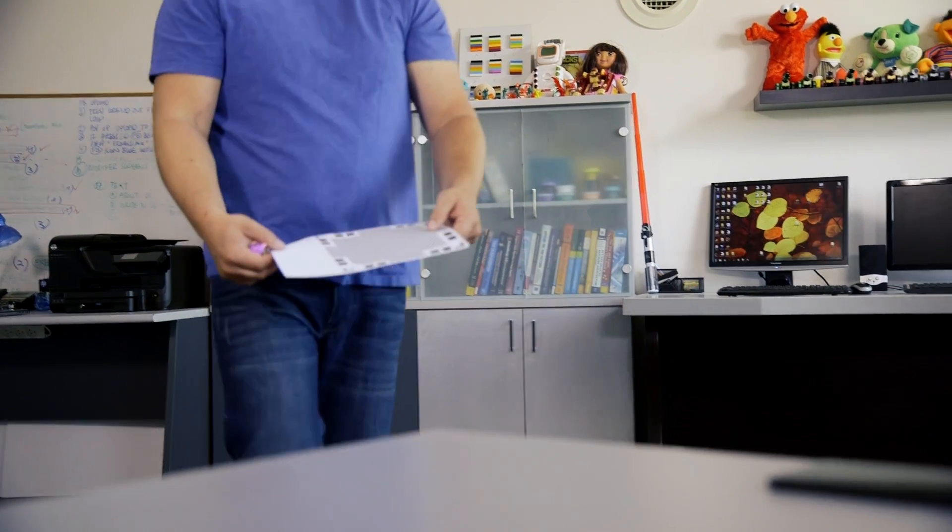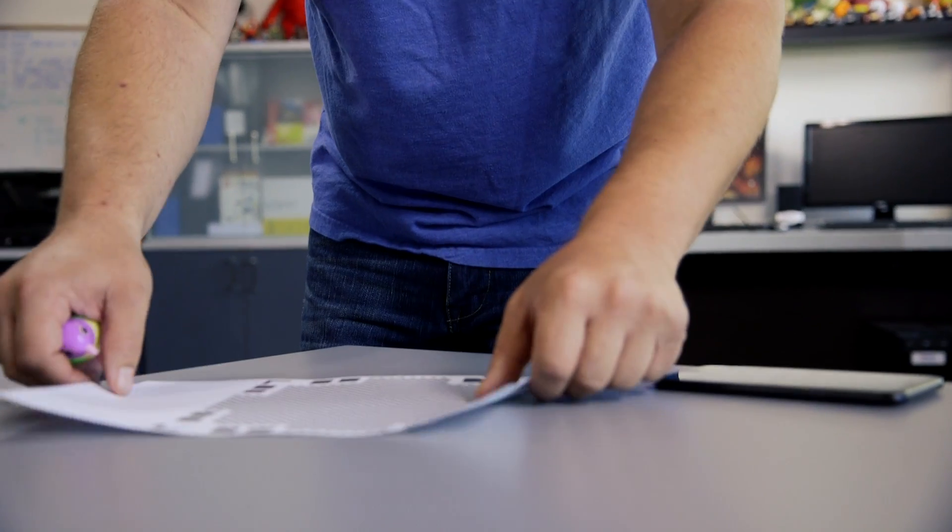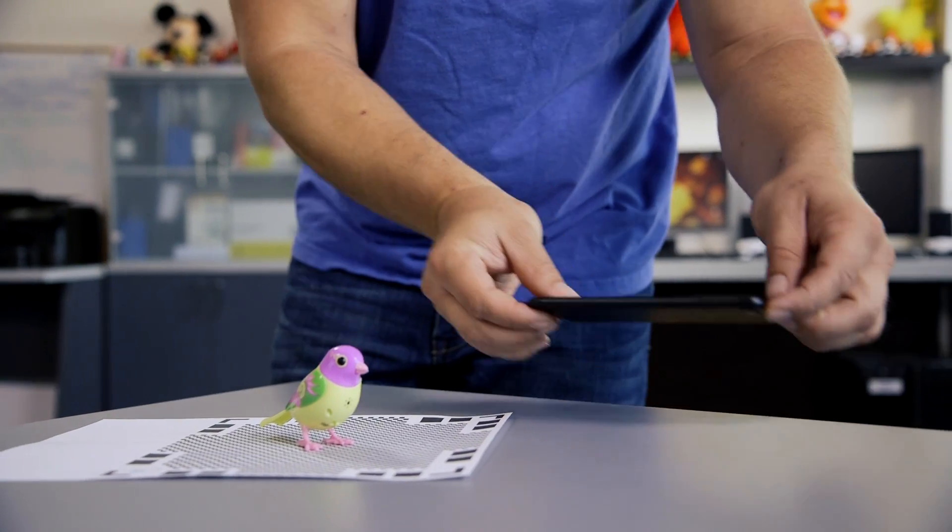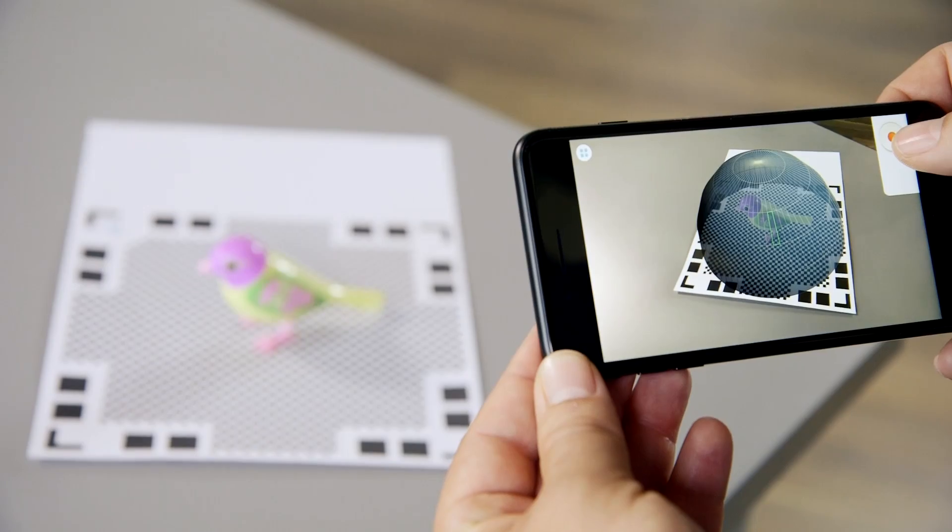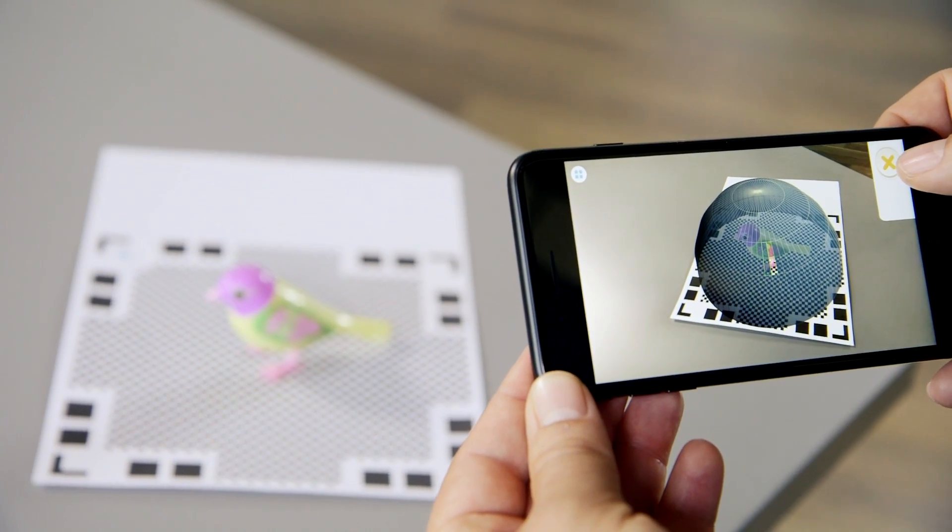Scanning is super easy with Clone. Just place your object in the middle of the mat and our AR dome will guide you through the scanning process.